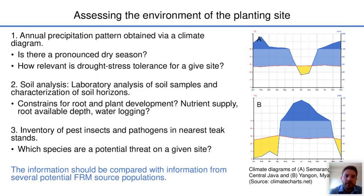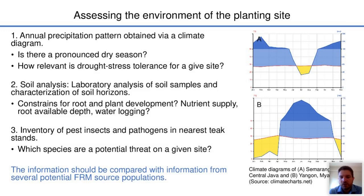Annual precipitation patterns are an important aspect. On the right of the slide, we see a climate diagram of Semarang in central Java, where the dry season is mostly pronounced during two months from June until August. The lower climate diagram shows an area around Yangon in Myanmar, where there is a much more pronounced dry season lasting about four months. In this context, having obtained such a climate diagram, one could ask: how relevant is drought stress tolerance for a given site, and should I search for a producer that also focuses on drought tolerance in the breeding approach?